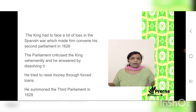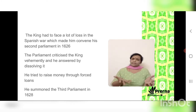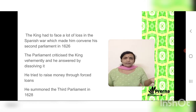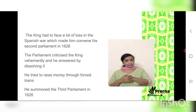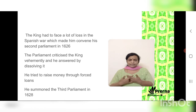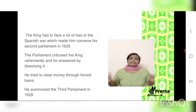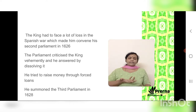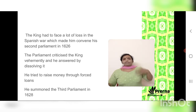The king had participated in the Spanish War, which led to a financial crisis. He summoned parliament again in 1626 to raise taxes, but parliament criticized him vehemently, and he responded by dissolving it. After this second dissolution, he tried to raise funds through forced loans — something parliament had no control over — which it did not like. Widespread protests forced him to summon a third parliament in 1628.